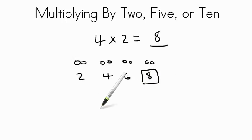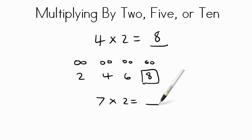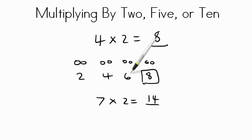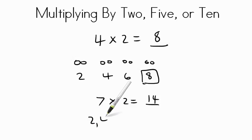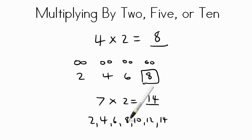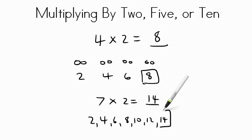Let's do another one by 2's. How about 7 times 2? See if you can figure that out. If you said 14, pat yourself on the back. This time we're not going to draw out the answers; we're just going to skip count up 7 groups of 2. So we go 2, 4, 6, 8, 10, 12, and 14. We have 1, 2, 3, 4, 5, 6, 7 — 7 groups of the number 2 — and the answer is 14.